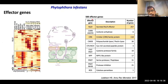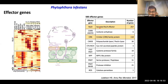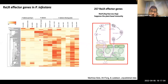Phytophthora infestans has around 500 effector proteins with different functions, as you can see in this table. Some of the most important effector proteins are the RXLR secreted effector proteins and the crinkler effector proteins. Interestingly, the RXLR effector proteins are expressed in Phytophthora infestans since a stage before infection and also during the colonization and infection process, as you can see here.